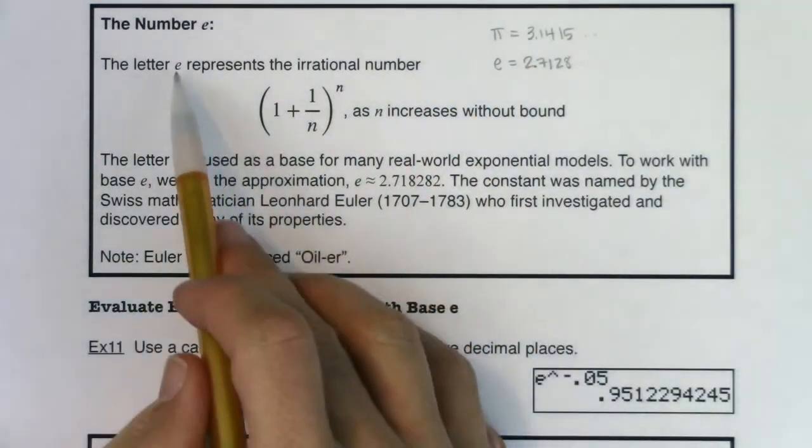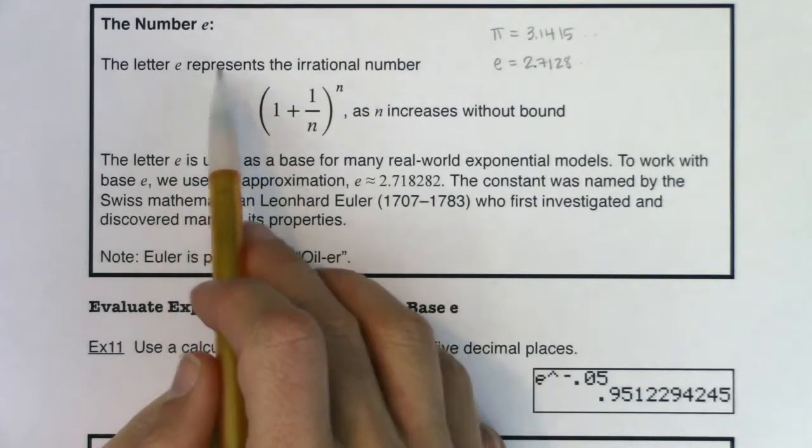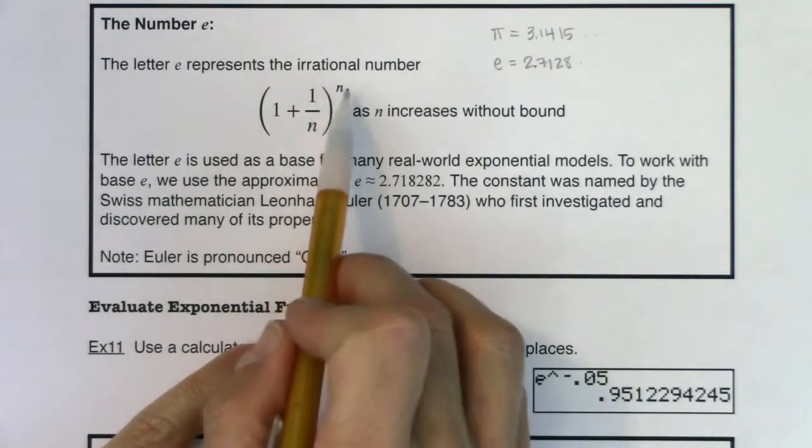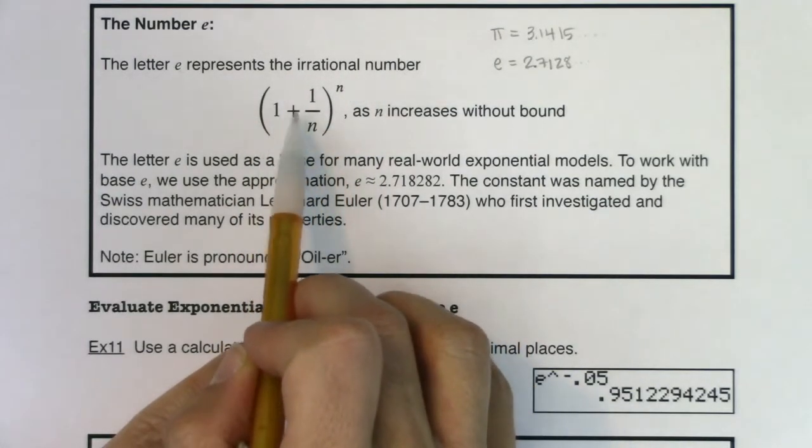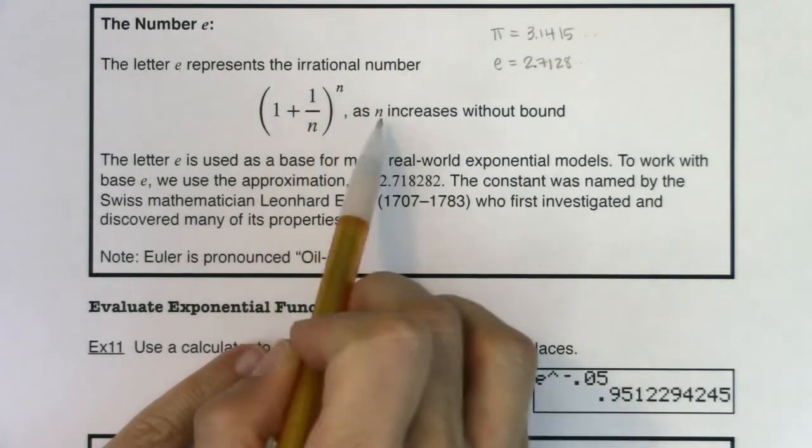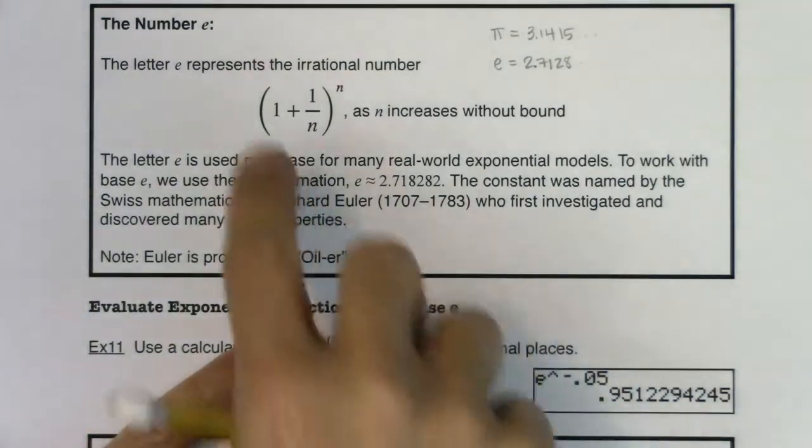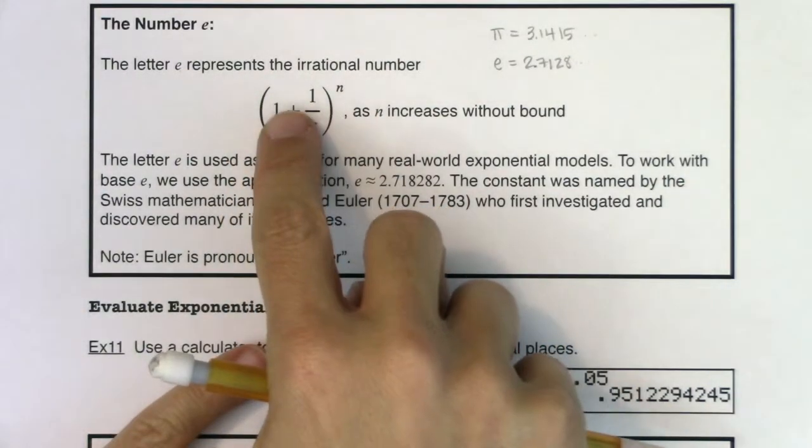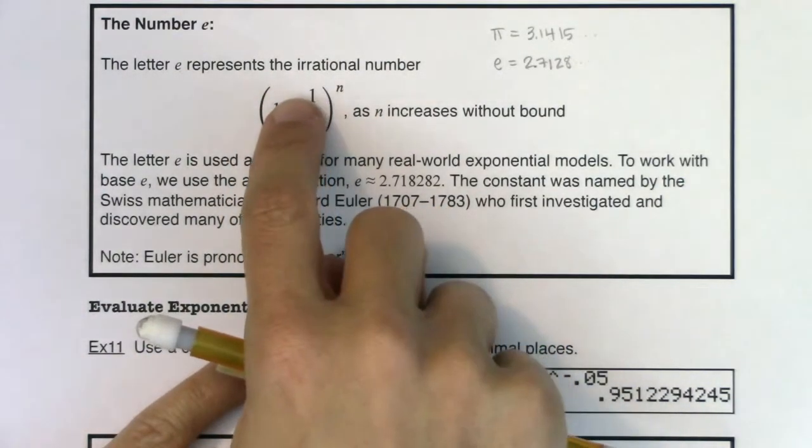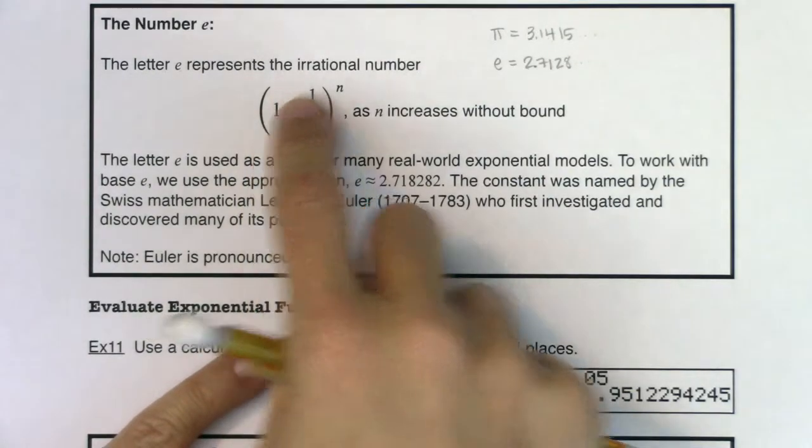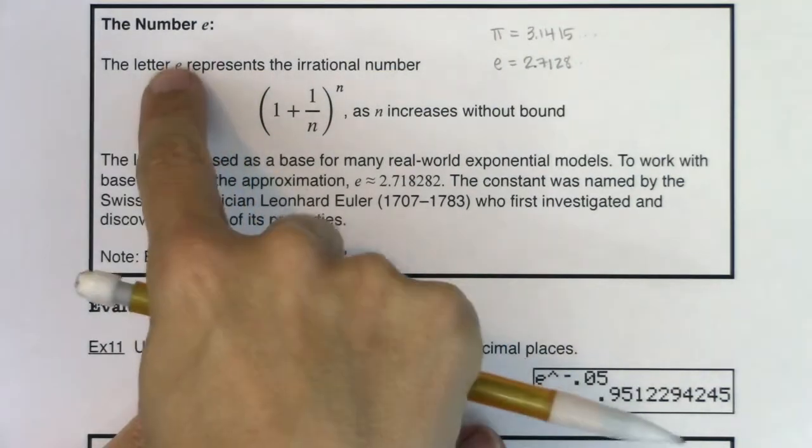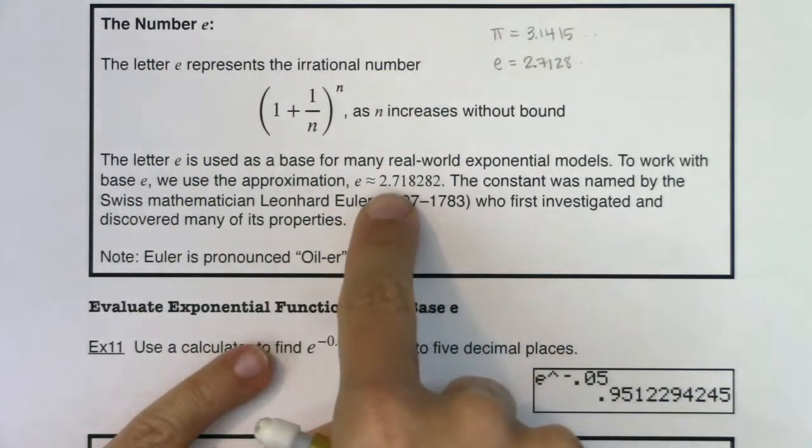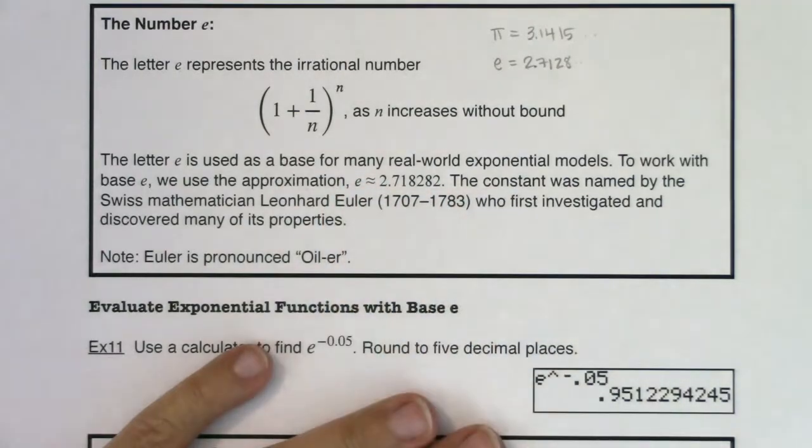So this letter, the letter e represents a number, and this is your number. And it is weird, right? It's the number (1 + 1/n)^n as n increases without bound. Now you're going to study this when you get to calculus. And we're not in calculus just yet, we're in pre-calculus. So I'm going to tell you that thing is the letter e, and it is the constant 2.718282, and again, it keeps on going.